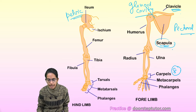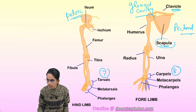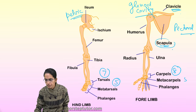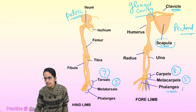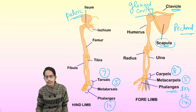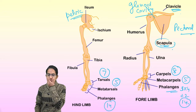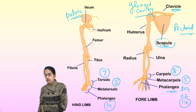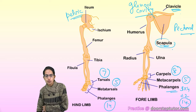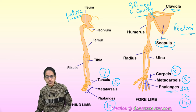In the hand there are eight carpals; in the leg there are seven tarsals. Metacarpals and metatarsals are five each. The number of phalanges is the same: three per finger except two in the thumb, giving 14 phalanges in the hand as well as the leg.